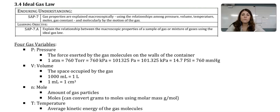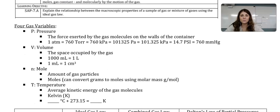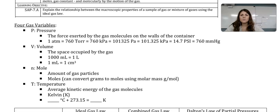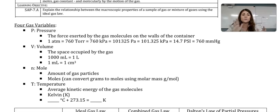A few things to remember — there are four gas variables: pressure, volume, moles, and temperature. Pressure talks about the force exerted by the gas molecules on the walls of the container. You can see here I have a pressure conversion. There are going to be some example problems where you may need to convert between units. Don't worry, this is on your equation sheet.